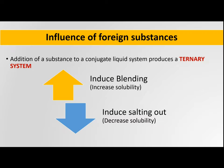We all know that the phenol-water system is an example of partially miscible liquids, which are also called conjugate liquids. A conjugate liquid system is a system where we mix two liquids which are partially miscible — that means they are miscible only at a particular ratio or concentration. Above and below that ratio, they are immiscible in one another.